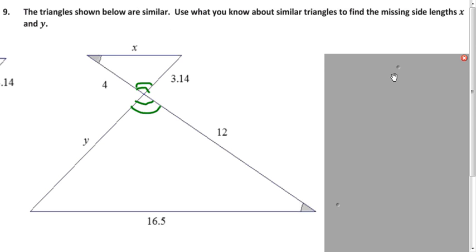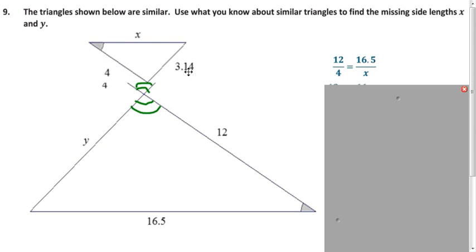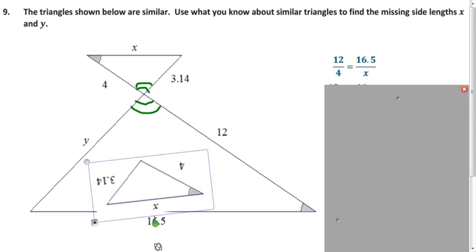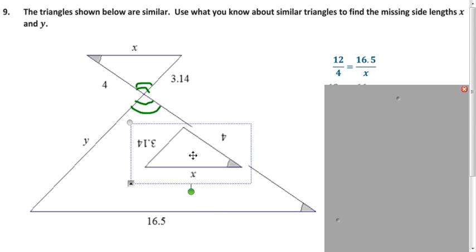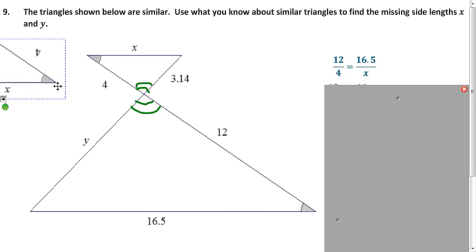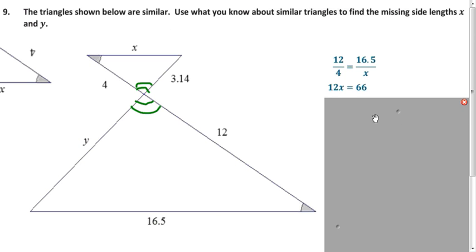So, you can write proportions here. The 12 corresponds to 4 and the 16.5 to the x. If you're having trouble seeing that, you can always take this one on top and turn it around. And you see that the 12 lines up at the 4, 16.5 to the x. So, it's the numbers upside down. So, let's solve that with cross product. Divide by 12 and you get 5.5 for x.